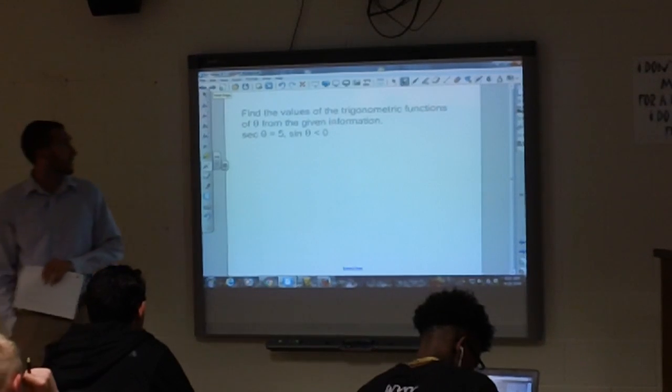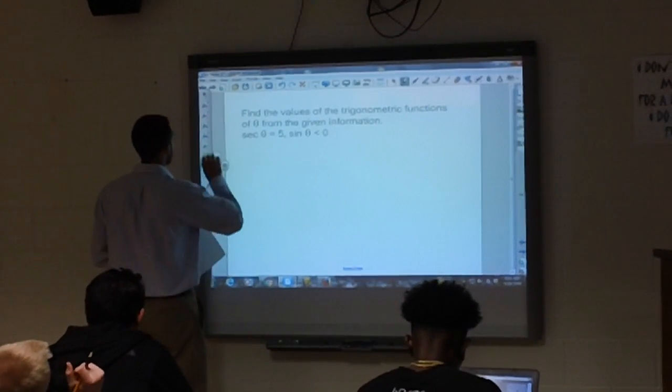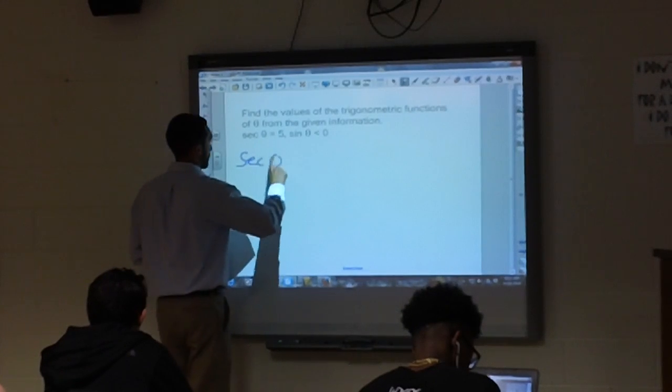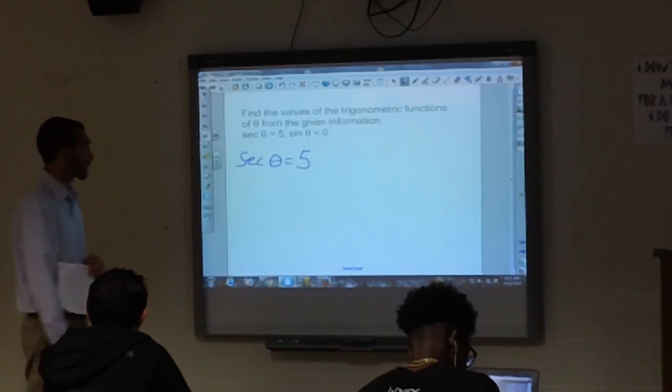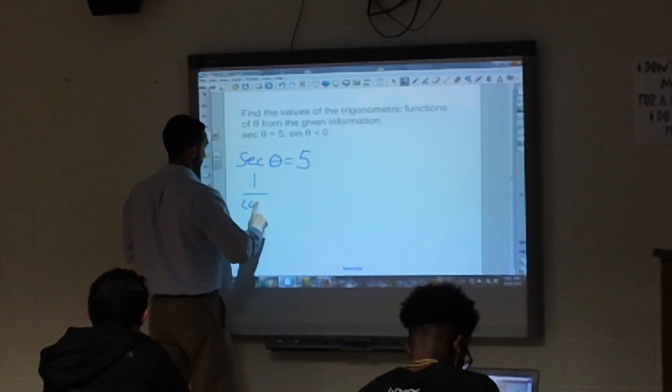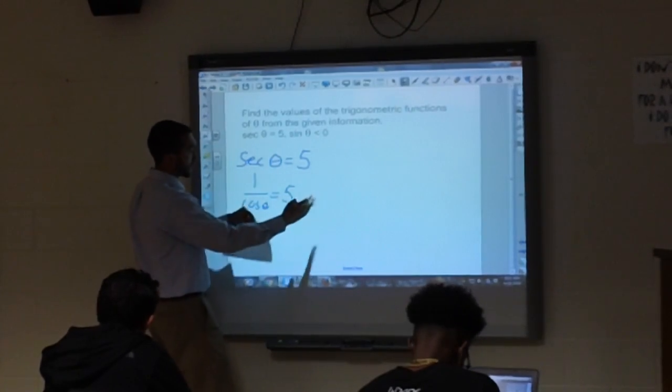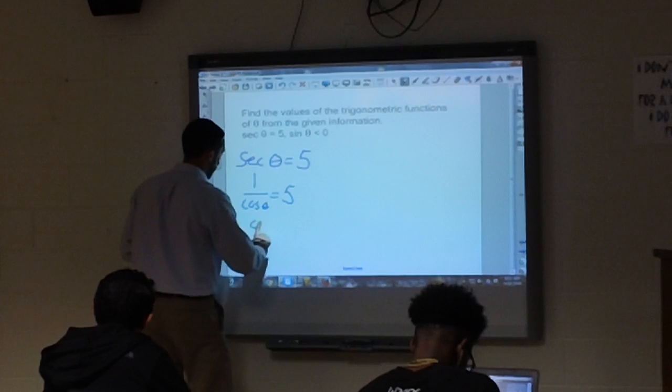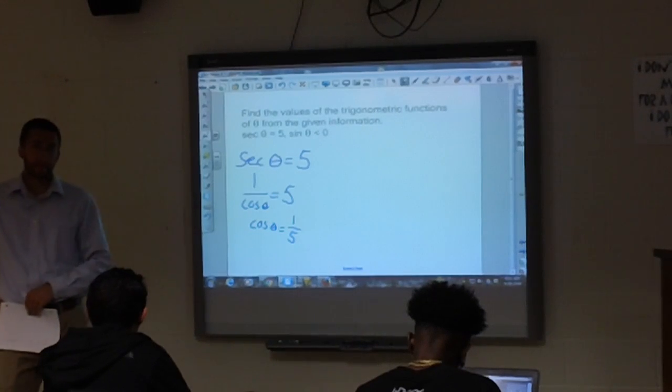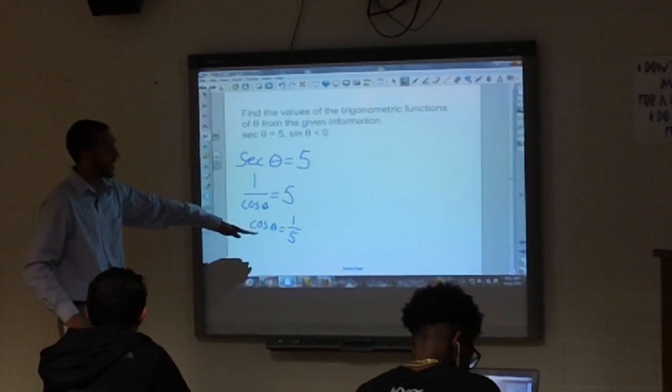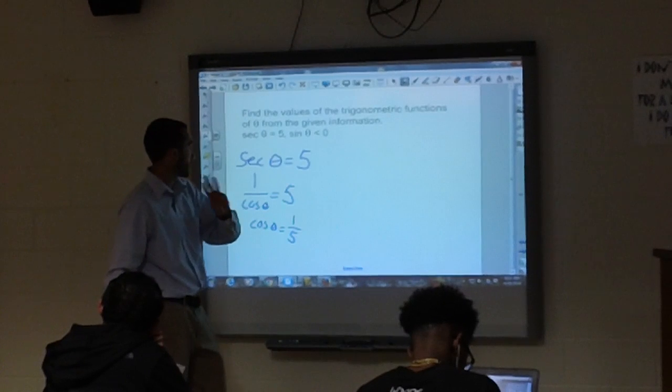Find the values of the trigonometric functions of theta from the given information. So they gave us secant of theta equals 5. Okay, and what is secant equal? 1 over cosine, right. So remember, I can flip these. Multiply both sides by cosine, then divide by 5. So I can get cosine. So now I've got secant, now I've got cosine. I've got to find the four remaining ones. Right? I've got to find sine. I've got to find cosecant. I've got to find tangent and cotangent.